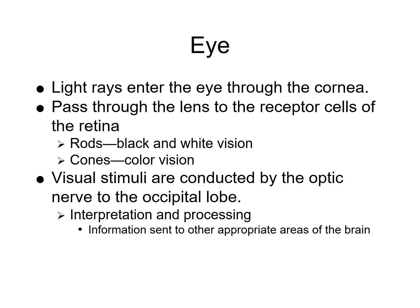Visual information is received from light rays that pass through the transparent cornea and then the lens. They focus the image on the receptor cells of the retina — the rods and the cones. The visual stimuli are then conducted by the optic nerves to the occipital lobe of the brain to help interpret and process the information received before being sent to other appropriate areas of the brain.